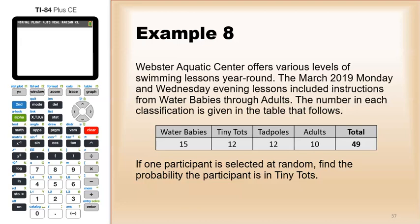To find the probability, there are 49 total participants and 12 of them are Tiny Tots. The probability is 12 out of 49, or approximately 0.245.